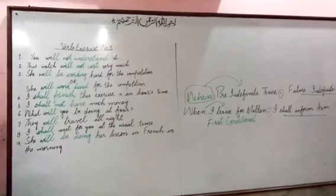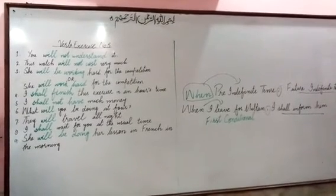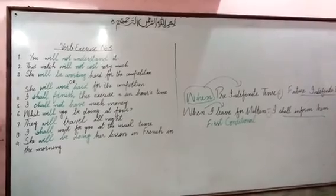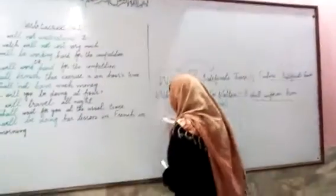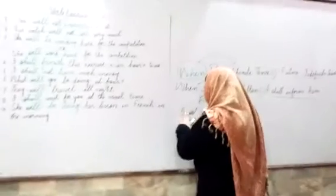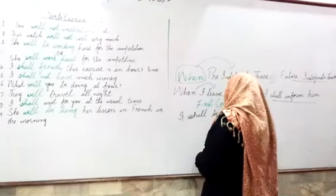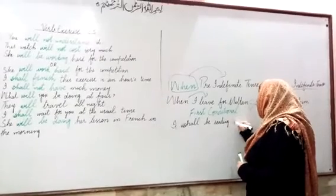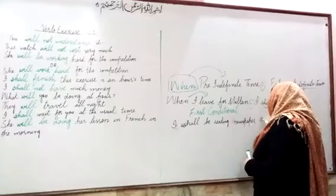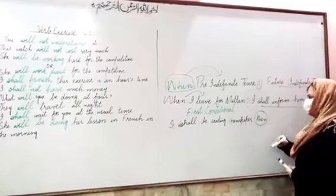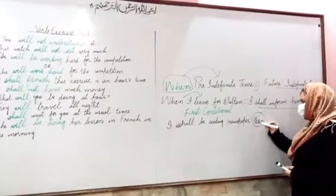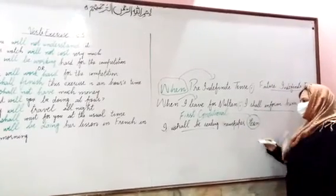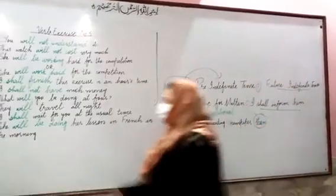'Then' is the key point. That's why we use future continuous tense in sentences like: 'I shall be reading the paper then,' or 'He will be playing hockey at that time in the morning.' If you find the word 'then,' you will use future continuous tense, also called future progressive tense. Now let's start exercise number 5.